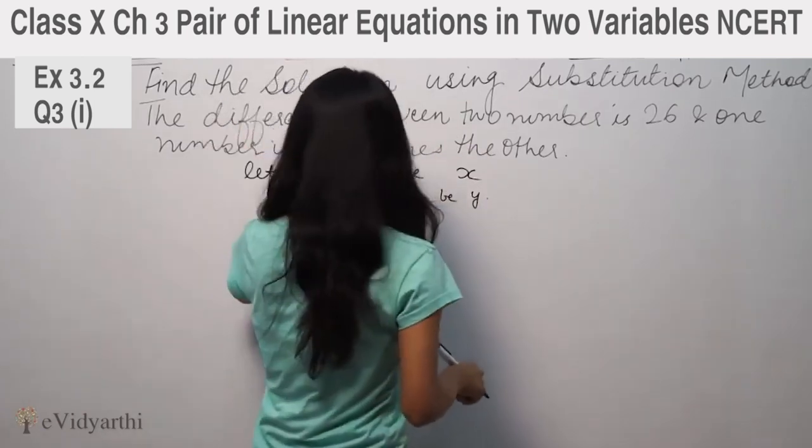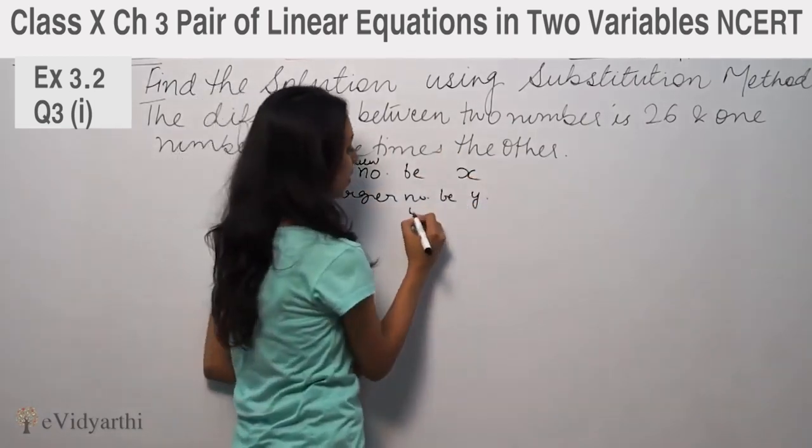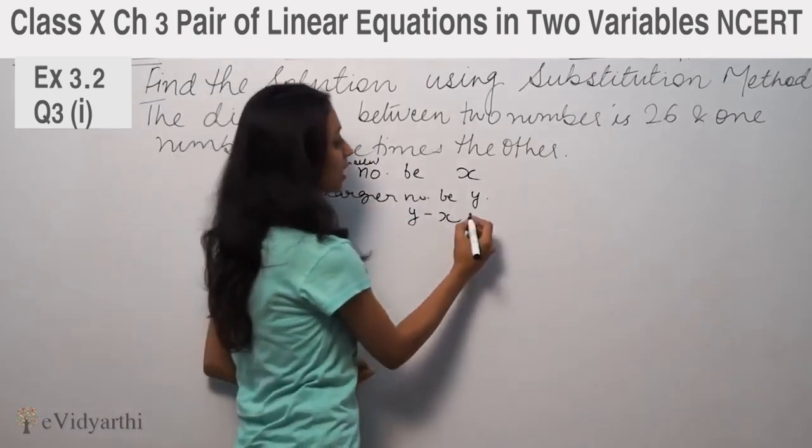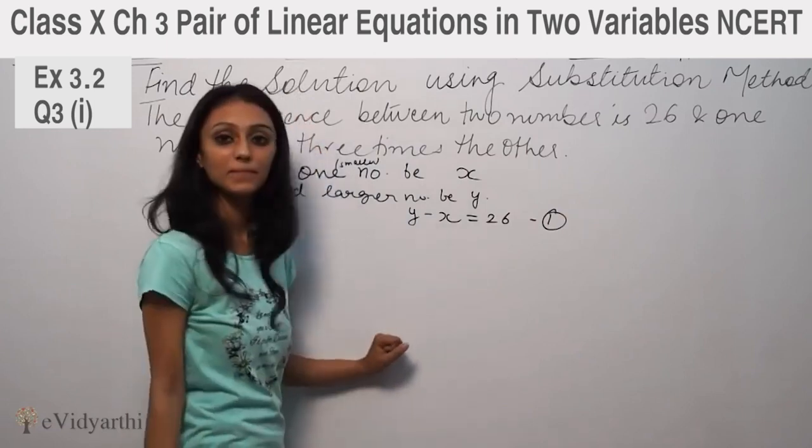So the difference between two numbers, if smaller number is x and larger number is y, then the difference is y minus x, larger number minus smaller number equal to 26. This is our first equation.